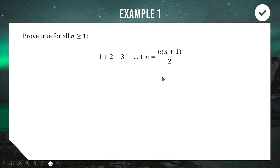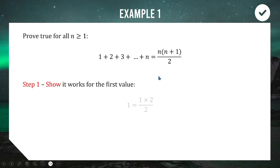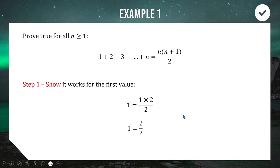For the first step of proving the statement we are going to show that it works for the first initial value in the string, setting n equal to 1 on both sides of the equation. When n equals 1, on the left we add up all the numbers up to 1, which is just 1. On the right we have 1 times (1+1) divided by 2, which is 1 times 2 divided by 2, equalling 1. Left-hand side equals right-hand side — step 1 complete.